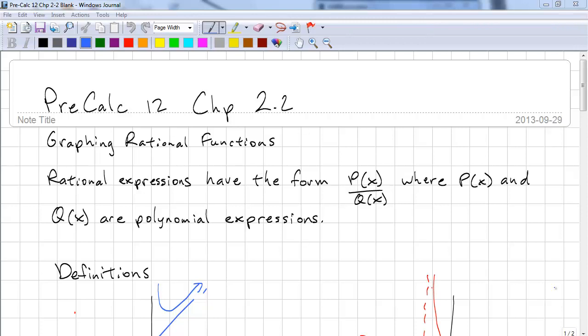To help you along, I'm going to show you some definitions. Rational expressions have the form p(x) over q(x), where p(x) and q(x) are polynomial expressions.